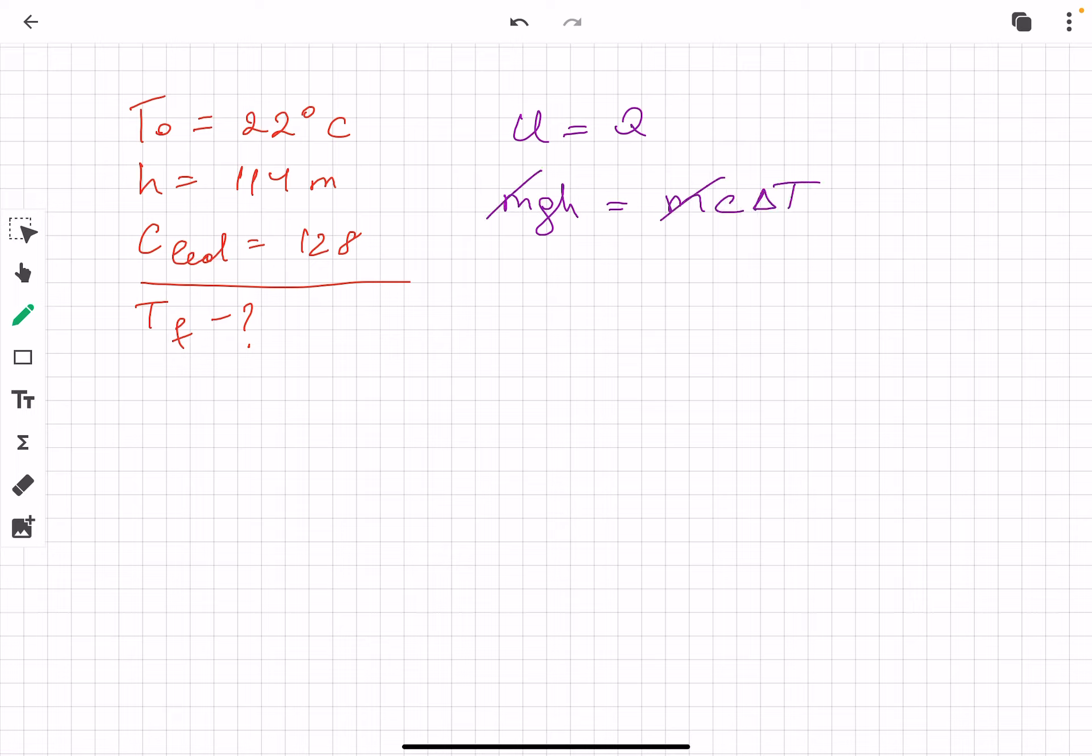So mass cancels out, so gh equals c(T_final - T_initial). This means gh divided by c plus T_initial equals T_final. So you have to find the final temperature.